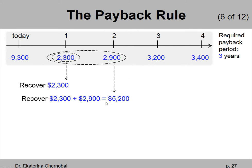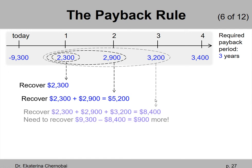Let's see how much we will recover if you wait another full year. We wait another one year — the third year on our timeline — and that brings us another $3,200. So where are we at? $2,300 from the first year, plus $2,900 from the second year, plus $3,200 from the third year. We are now at $8,900. We are really close to the total that needs to be recovered.